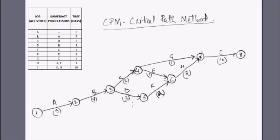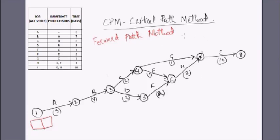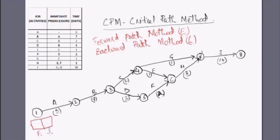Next, we will use the forward and backward pass methods to find the project completion time and identify the critical path. The forward pass method starts from the first node and we proceed in the forward direction till the last node. Using this method we calculate the earliest occurrence at each node, and using the backward pass we calculate the latest occurrence at each node.